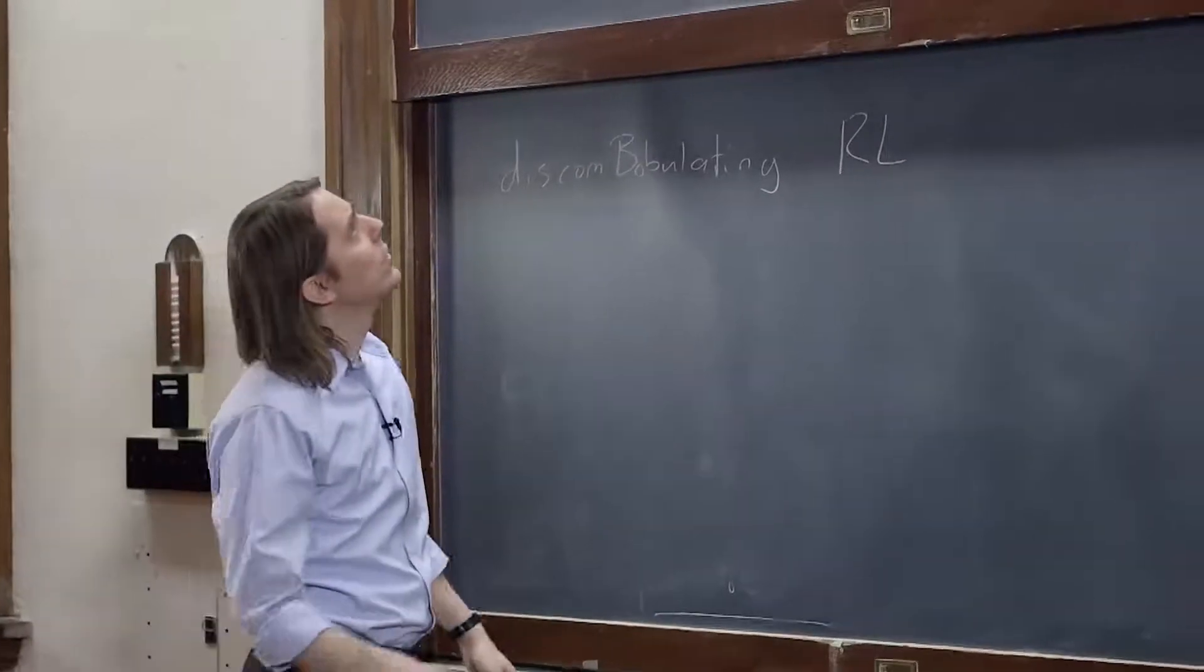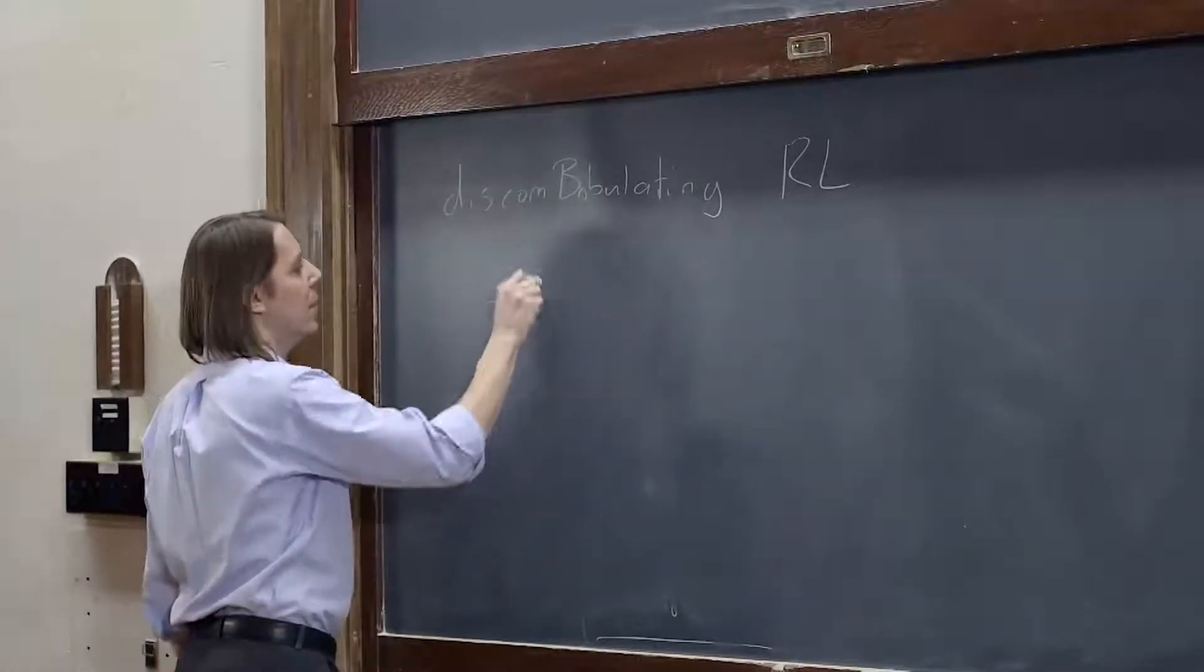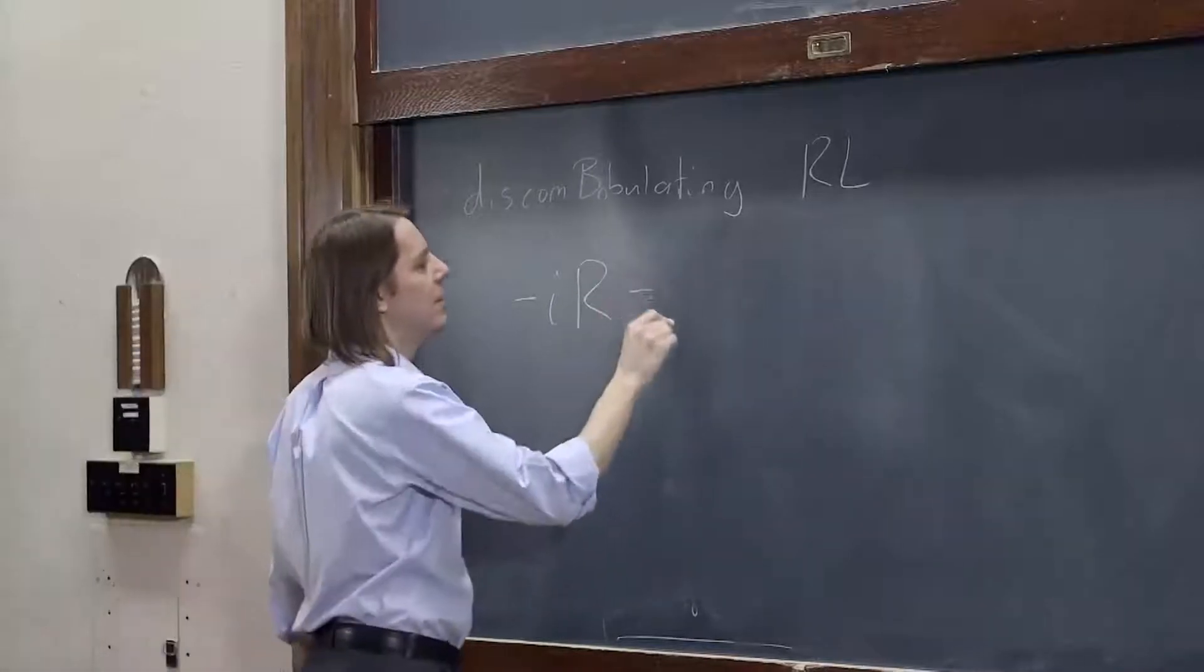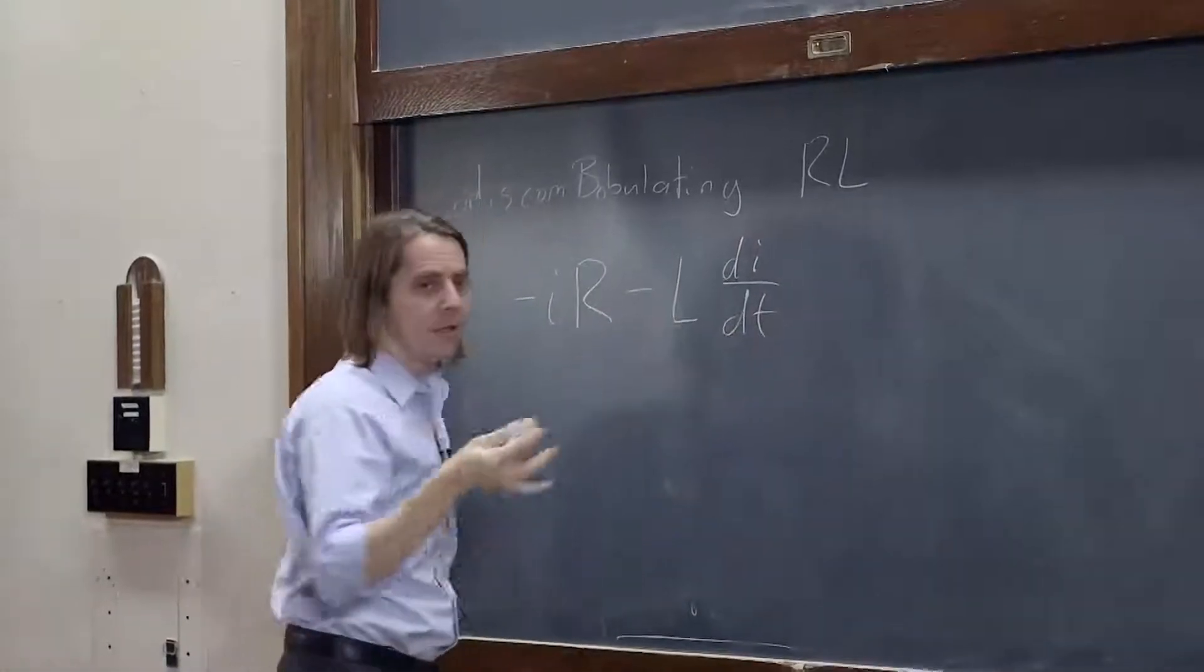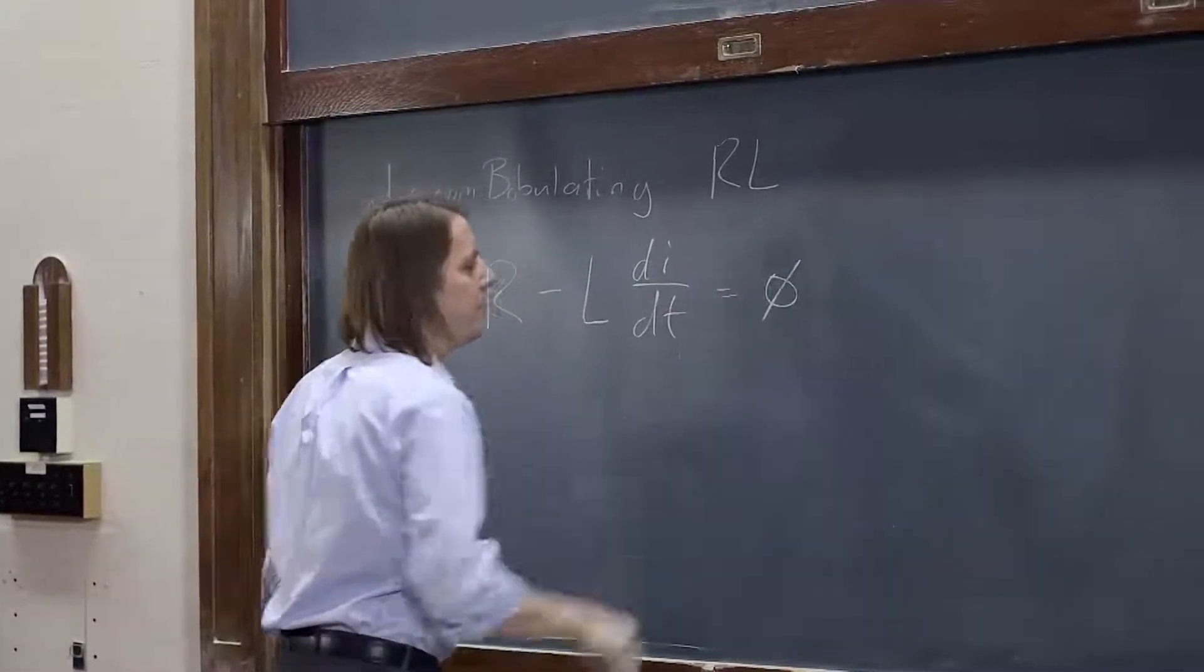So to discombobulate it, we're going to apply the Kirchhoff rule. Like we just said, we're going to say minus IR, because we're going clockwise around the loop, and minus L di dt, because we know that's what an inductor does. It has a back EMF equals zero.